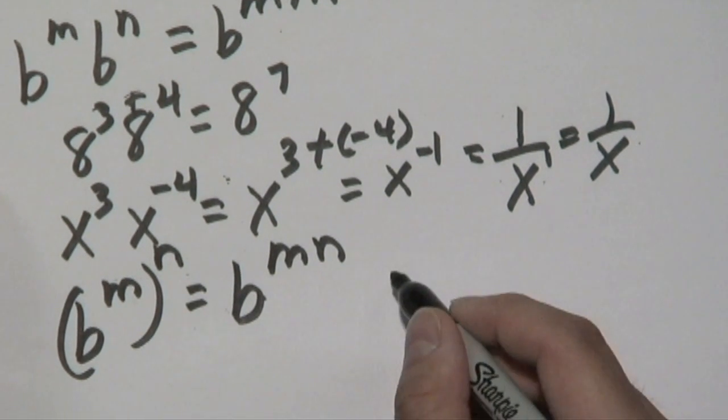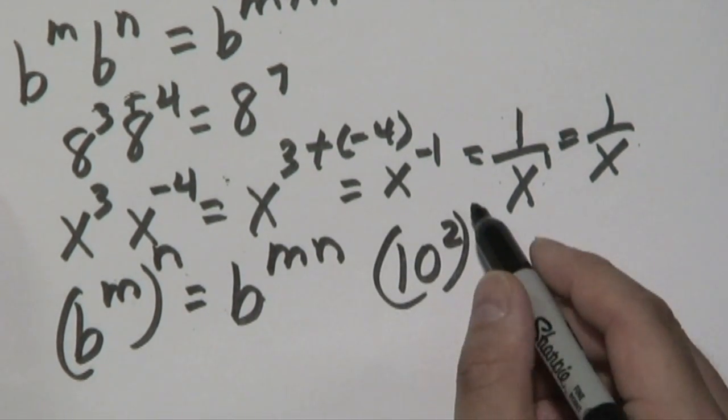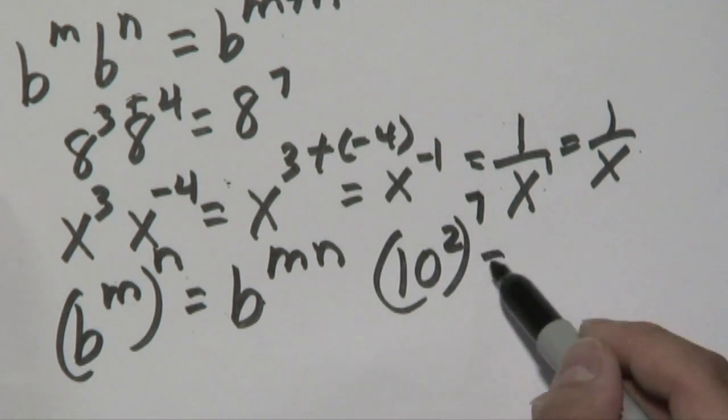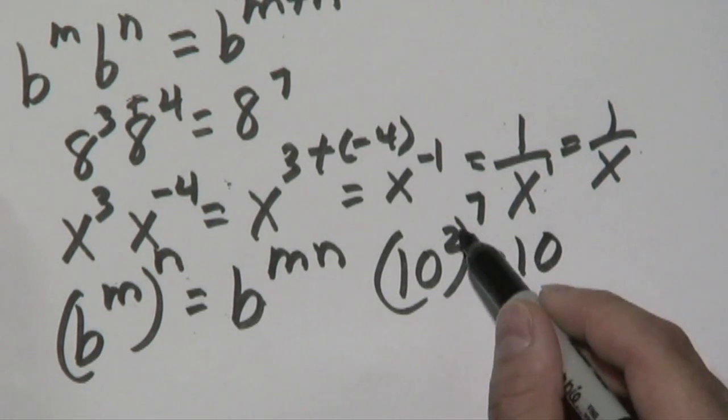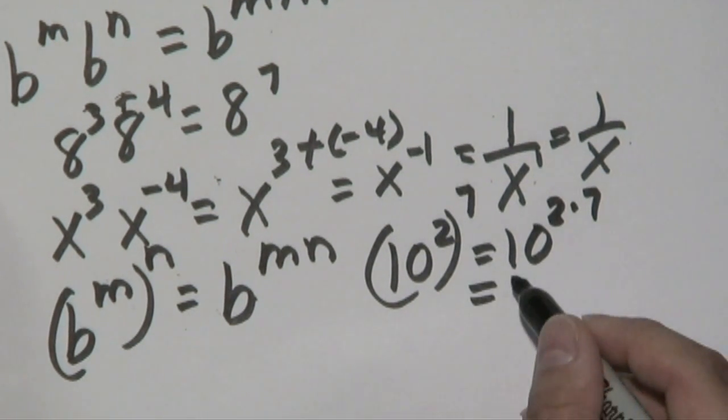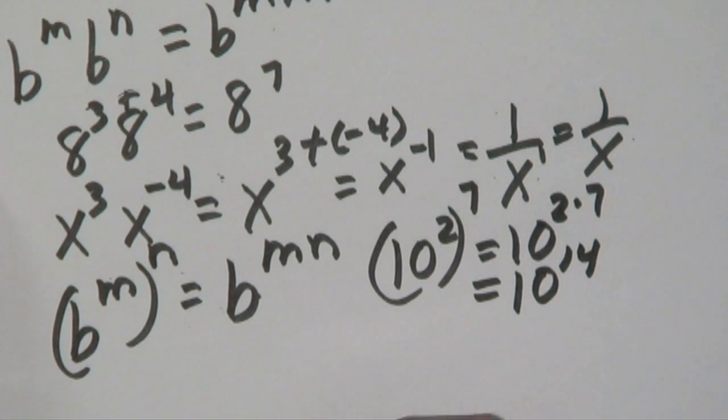So for example, if you have 10 to the second raised, let's just say, to the seventh power, what you would do simply is take those two numbers, 10 to the, and then you would take the 2 and the 7 and multiply those together, and as you know, that's 10 to the 14th power.